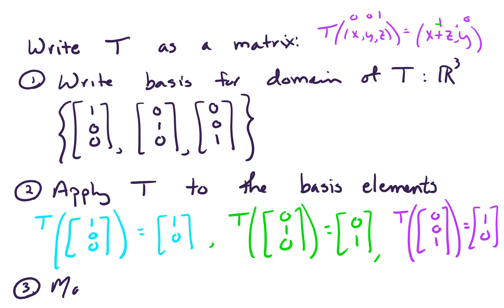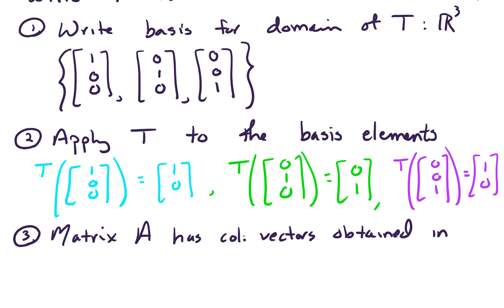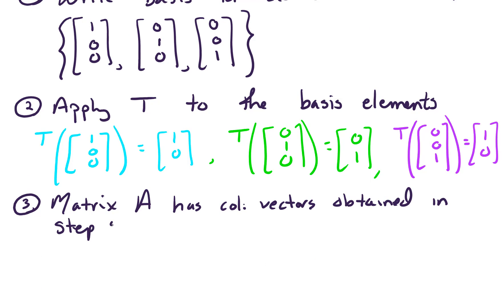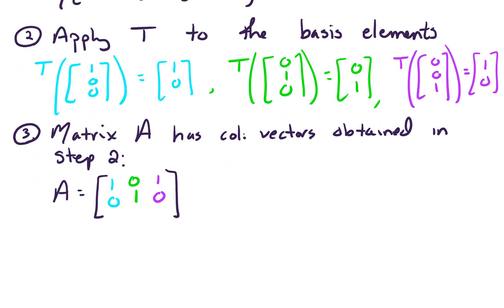So those three column vectors become matrix A. Matrix A has column vectors obtained in step 2. So here comes matrix A. Matrix A looks like [1, 0; 0, 1; 1, 0].